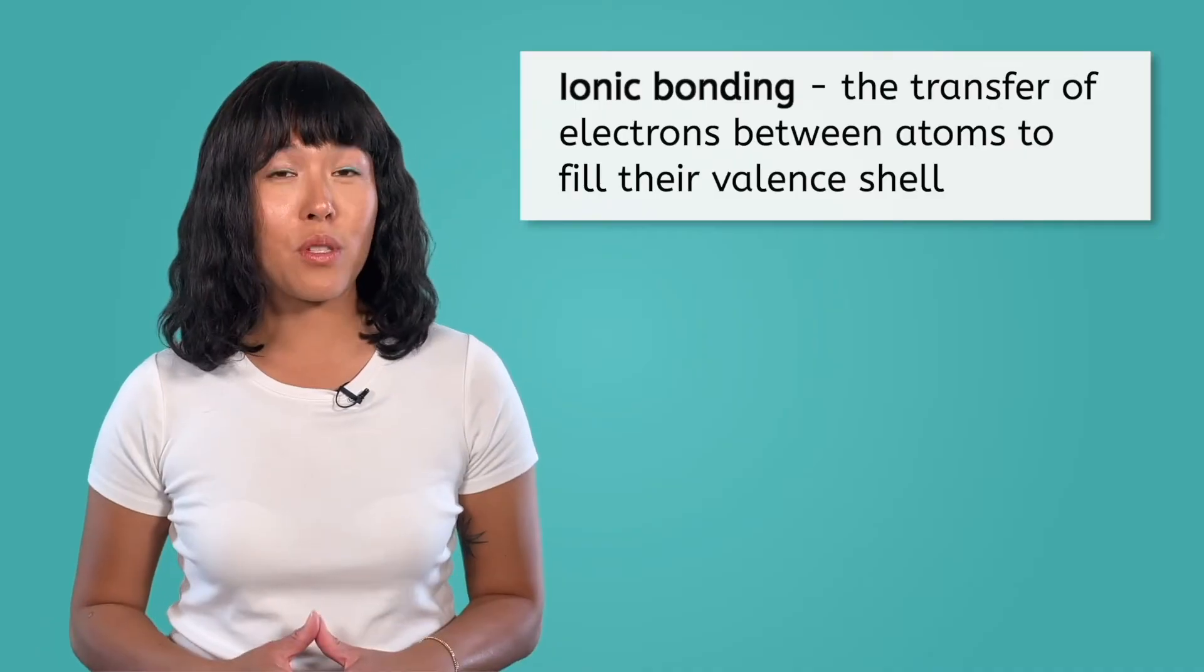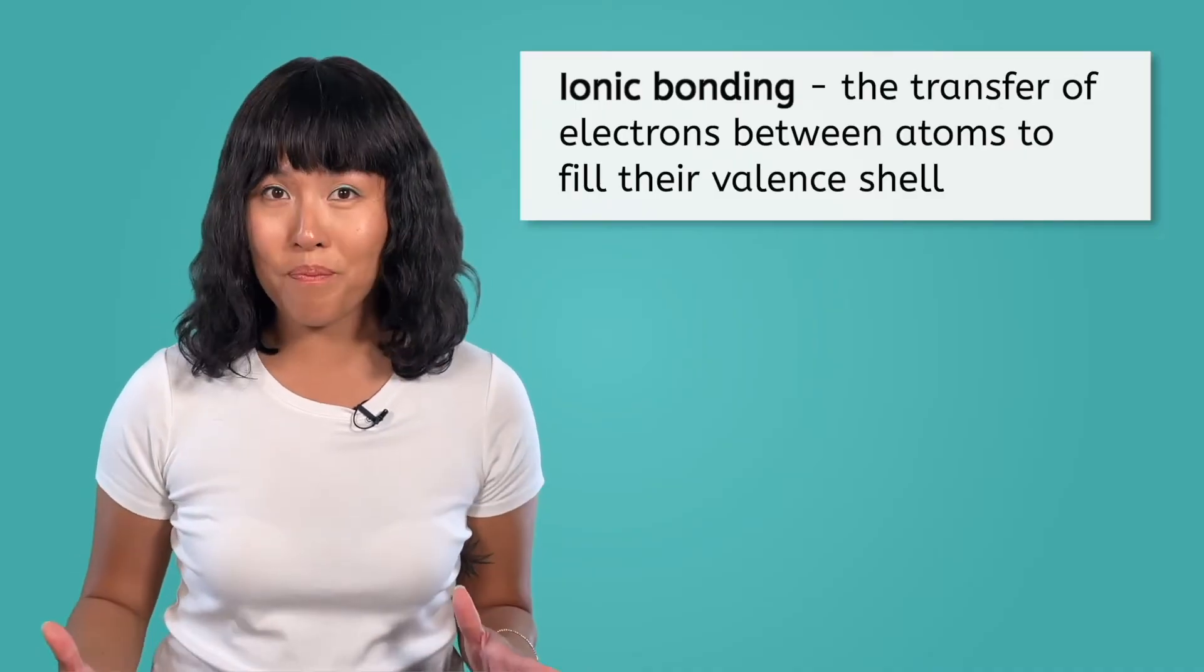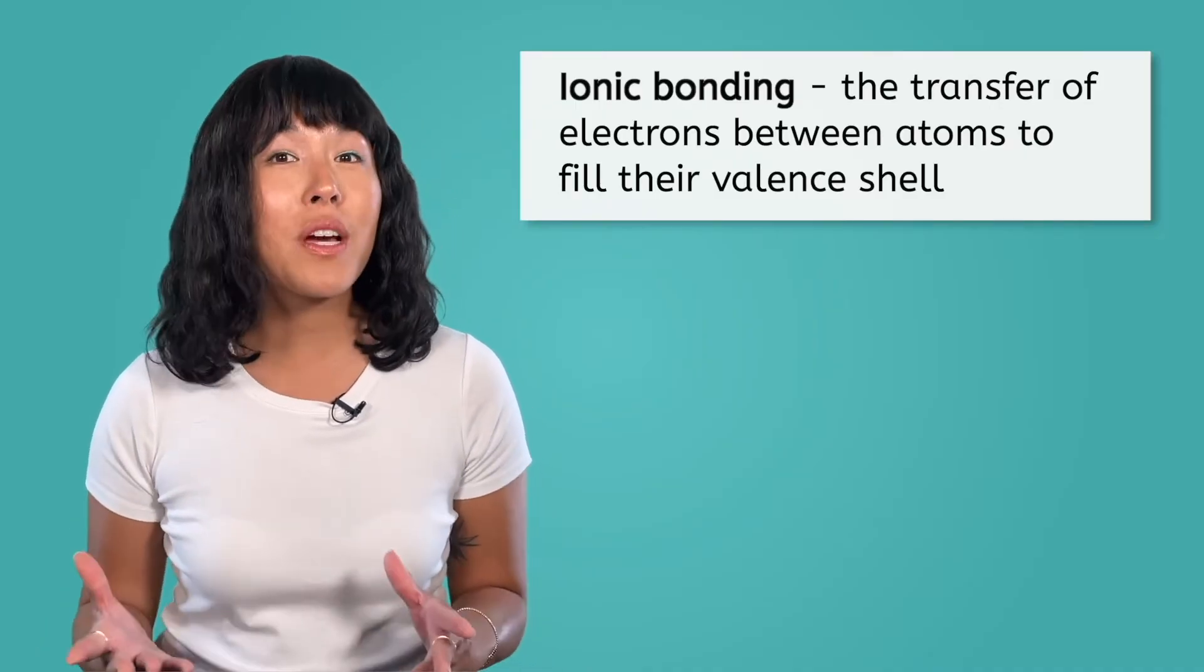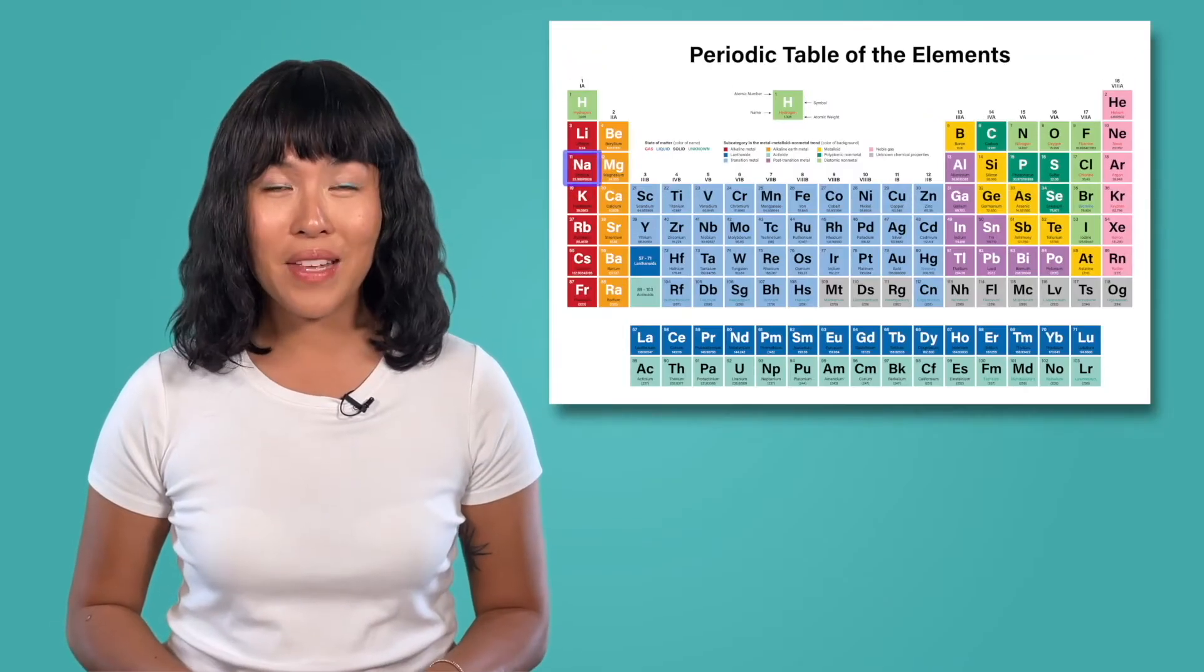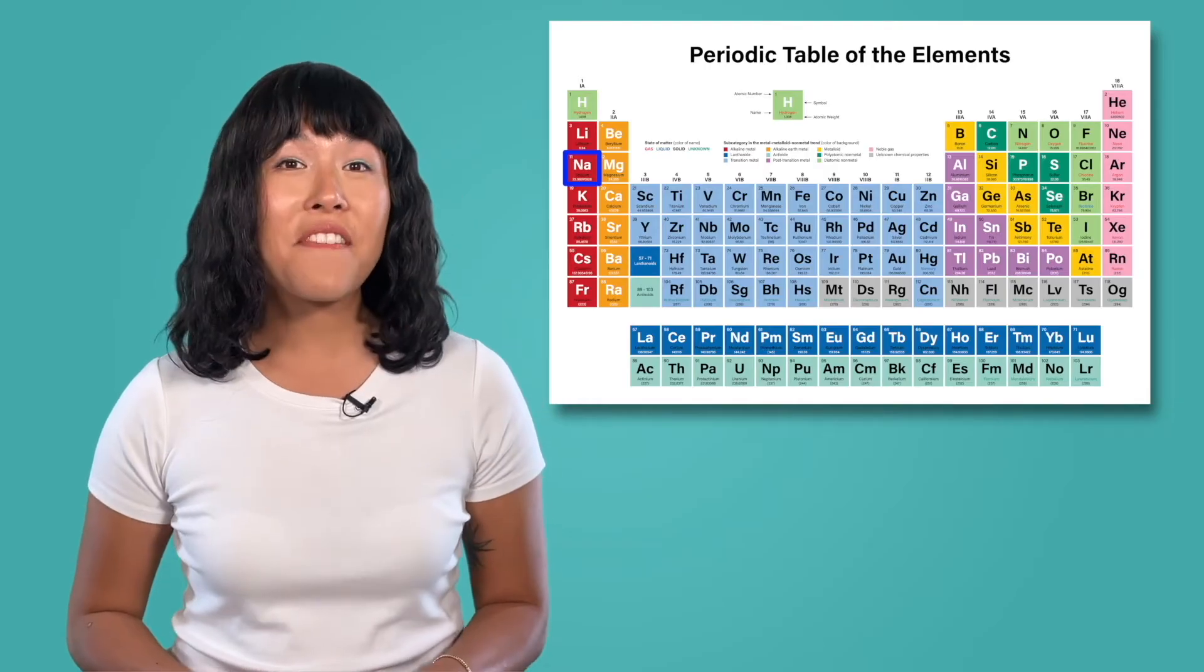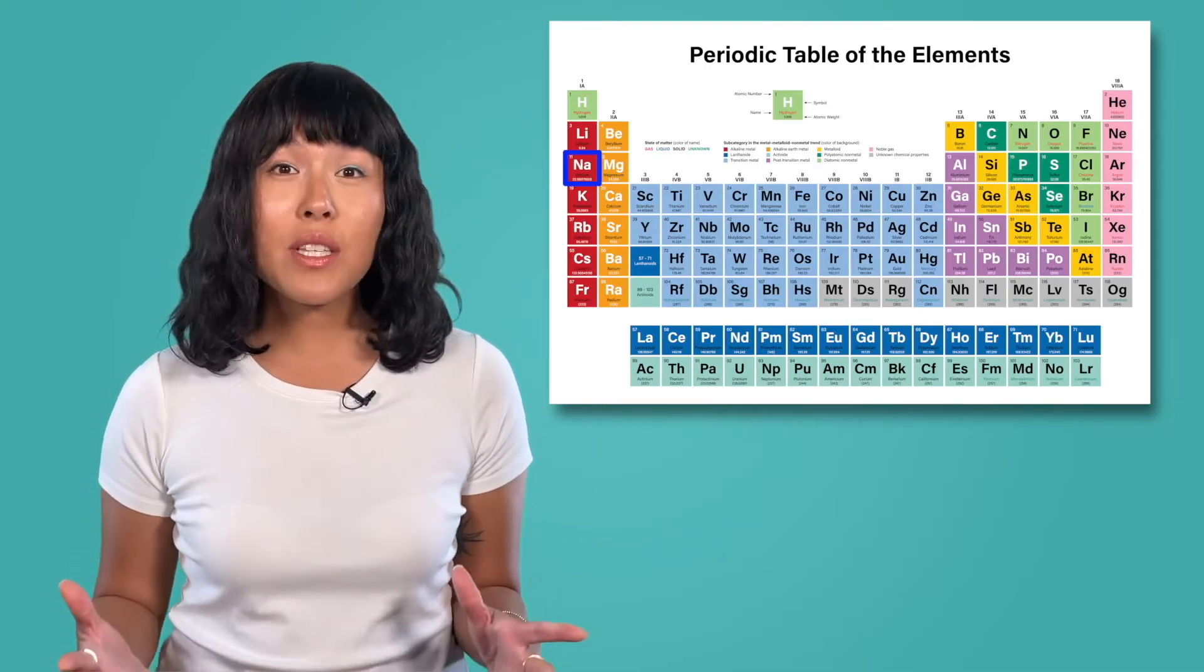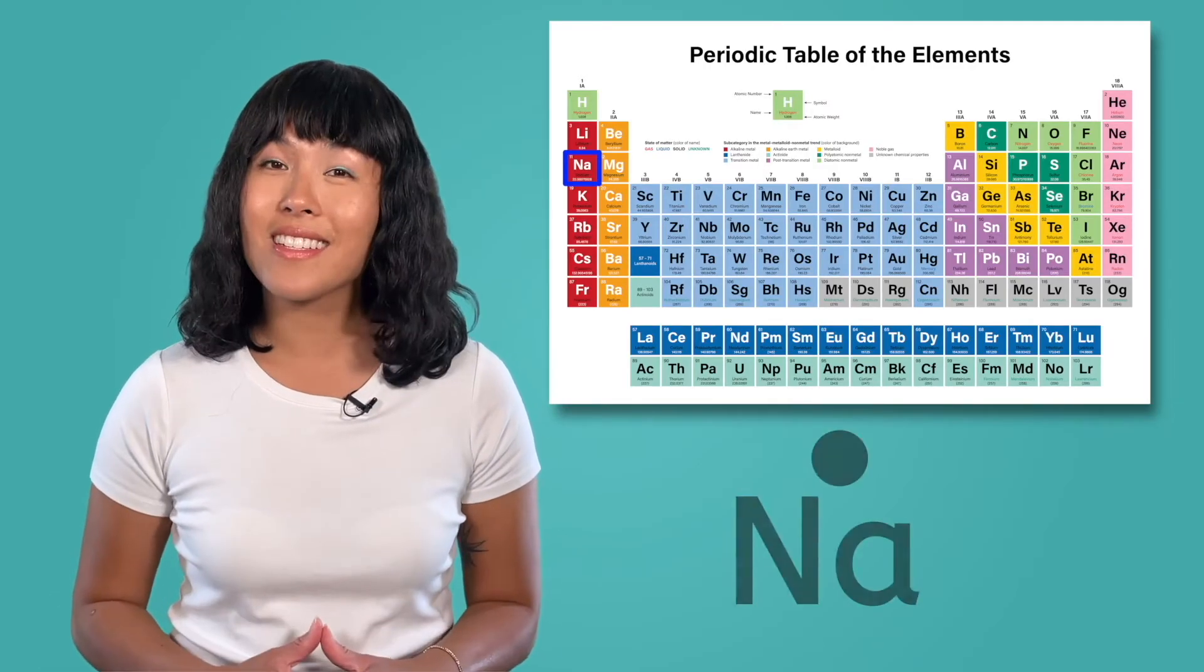Let's look at some examples of how ionic bonds form. How about we start with sodium and chlorine? The first step is to draw the Lewis dot structure for each element. Remember, we only need to focus on the valence electrons in the Lewis dot structure, and we can determine the number of valence electrons an atom has based on its group in the periodic table. Sodium is in group one and has one valence electron, so its Lewis dot structure has one dot, like this.